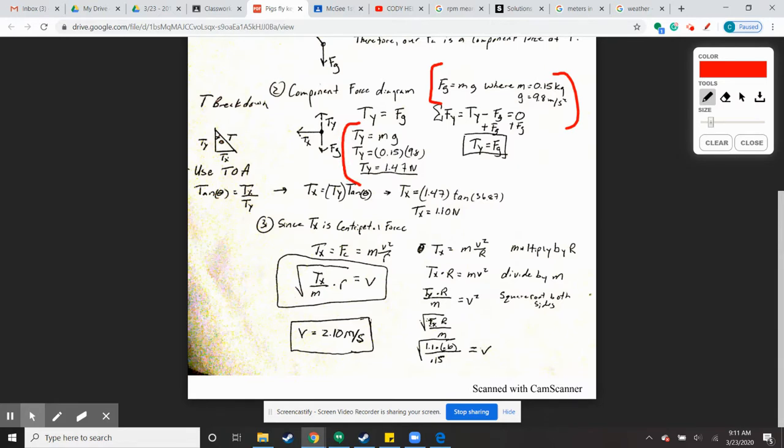So Ty equals Mg, so 0.15 times 9.8 gives us Ty equals 1.47. So why does that matter?